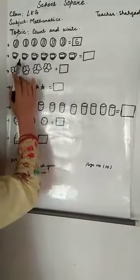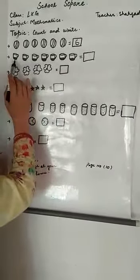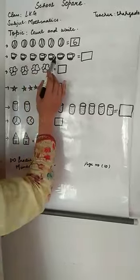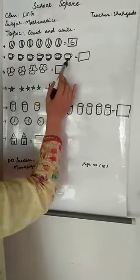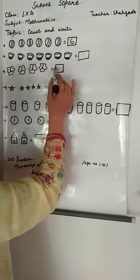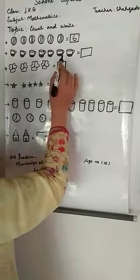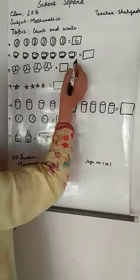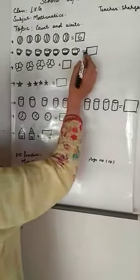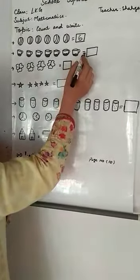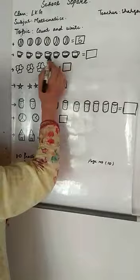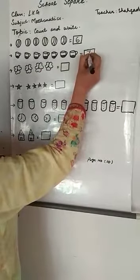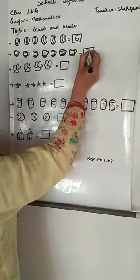यहाँ cups हैं: one, two, three, four, five, six, seven. Seven cups हैं। इसको अच्छी तरह से देखना है, box में लिखना है — seven. Is equal to seven.